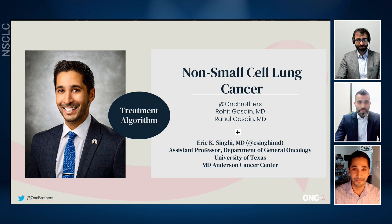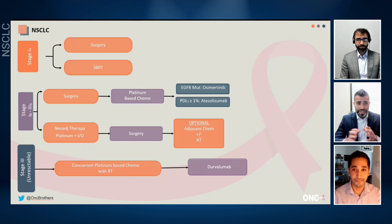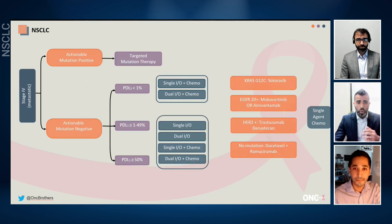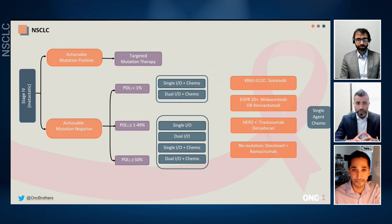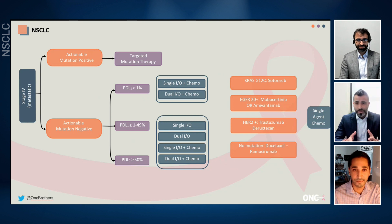Hi, thanks so much for having me. We have divided the non-small cell lung cancer algorithm into three parts — stage one to stage three, where the treatment is with curative intent, then stage four, with or without actionable mutation. Our focus today will be on advanced metastatic non-small cell lung cancer with no actionable mutations in the first-line setting. Here is that subset, and the stage is all yours.